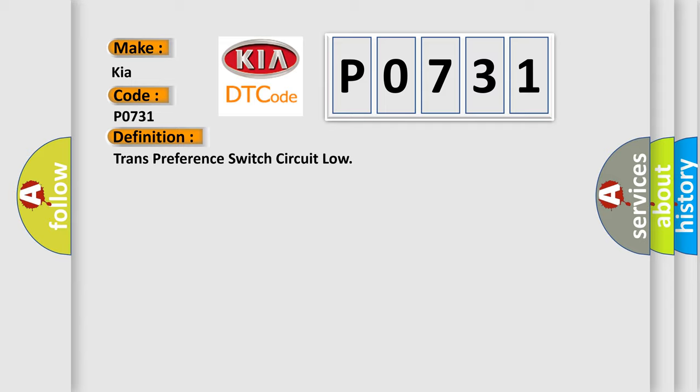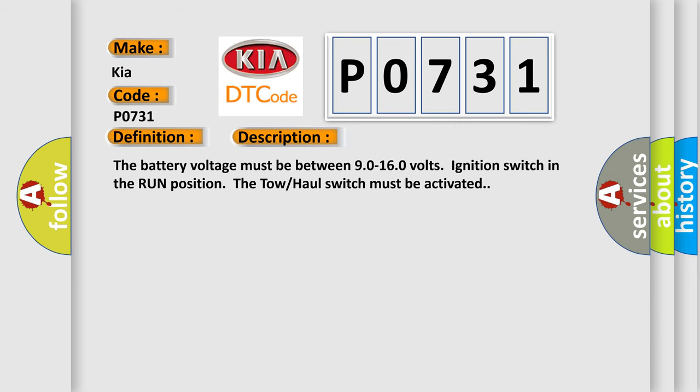And now this is a short description of this DTC code. The battery voltage must be between 9.0 to 16.0 volts, ignition switch in the run position, the tow/haul switch must be activated.